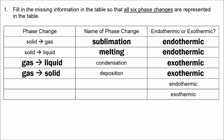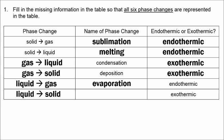We have two more phase changes: liquid to gas and liquid to solid. Liquid to gas is an endothermic process, and that's called evaporation. Liquid to solid is an exothermic process, and that's called freezing.